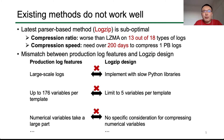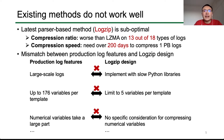We investigated this problem and found the inability of LogZip lies in mismatches between production log features and LogZip's design. First, LogZip uses slow Python libraries, and as a result, it has to limit the number of variables per template to reduce overhead. However, production logs have far more variables than LogZip's limit. Besides, numerical variables take a large part in production logs, but LogZip has no specific consideration to compress these kinds of variables.